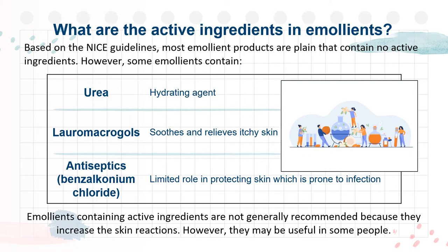What are the active ingredients in emollients? Based on the NICE guidelines, most emollient products are plain and contain no active ingredients. However, some emollients contain urea, which is used as a hydrating agent; lauromacrogols, used to soothe and relieve itchy skin; and lastly, antiseptics, for example benzalkonium chloride, which have a limited role in protecting skin prone to infection. Emollients containing active ingredients are not generally recommended because they increase skin reactions. However, they may be useful in some people.